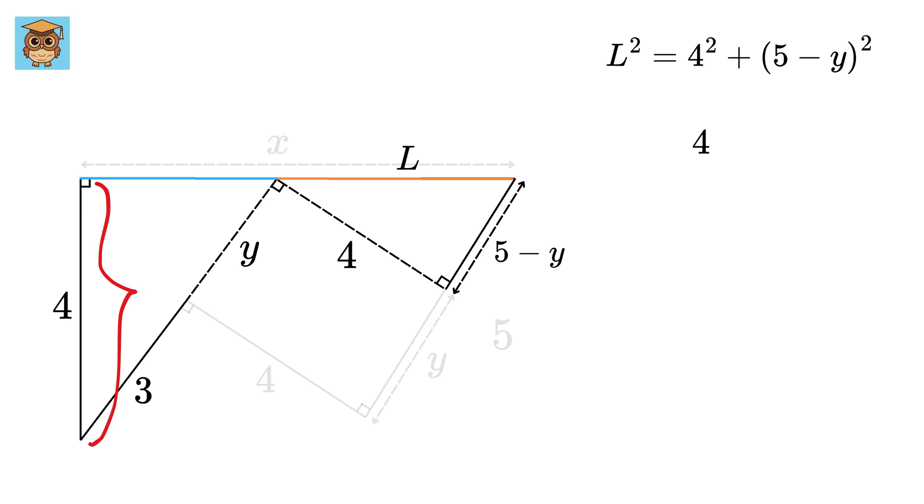So by using a similar triangle property, this length, which is 4 upon this length, which is hypotenuse, or 3 plus Y, will be the same as this length, which is 4 upon this hypotenuse, which is L. These 4s will get cancelled out, and we will get L equals 3 plus Y.